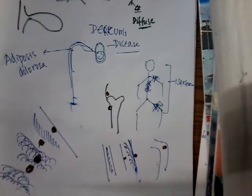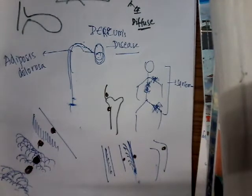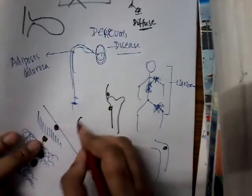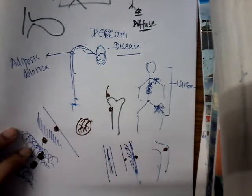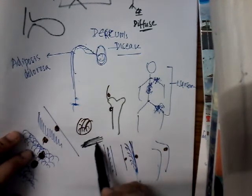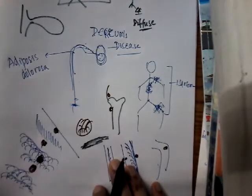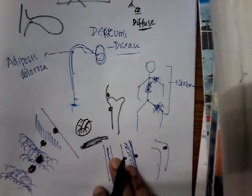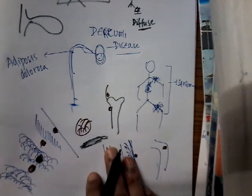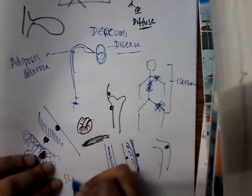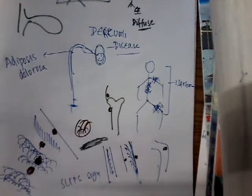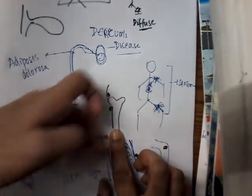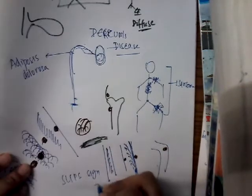The clinical features of lipoma: it is localized and does not cause any systemic swelling. It can be lobular and is non-tender. It is semi-fluctuant because fat in the body is in a semi-liquid state. The skin over it is pinchable because lipoma occurs below the skin. Sometimes it can be pedunculated. Most importantly, slip sign is positive — it just slips under the skin like a mouse. If you palpate one side of the lipoma, it slips to the other side.